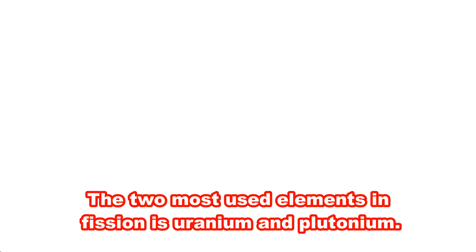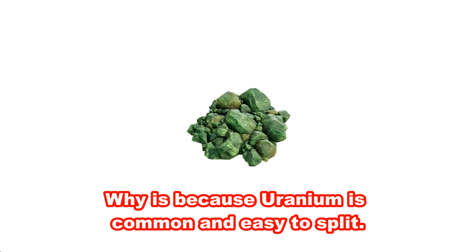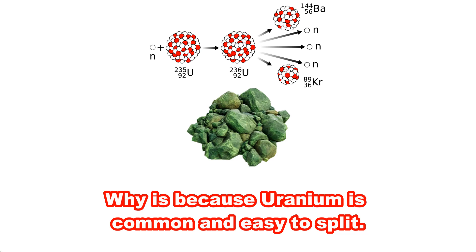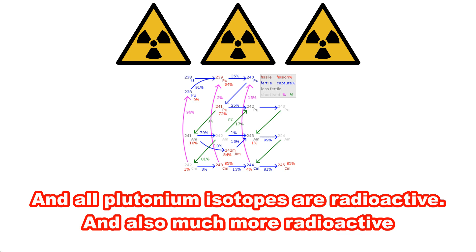The two most used elements in fission are uranium and plutonium. This is because uranium is common and easy to split, and all plutonium isotopes are radioactive and also much more radioactive.